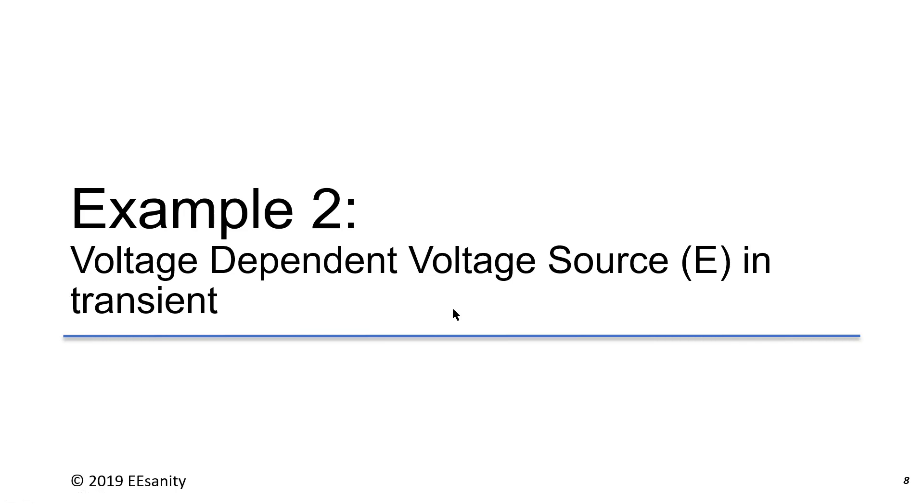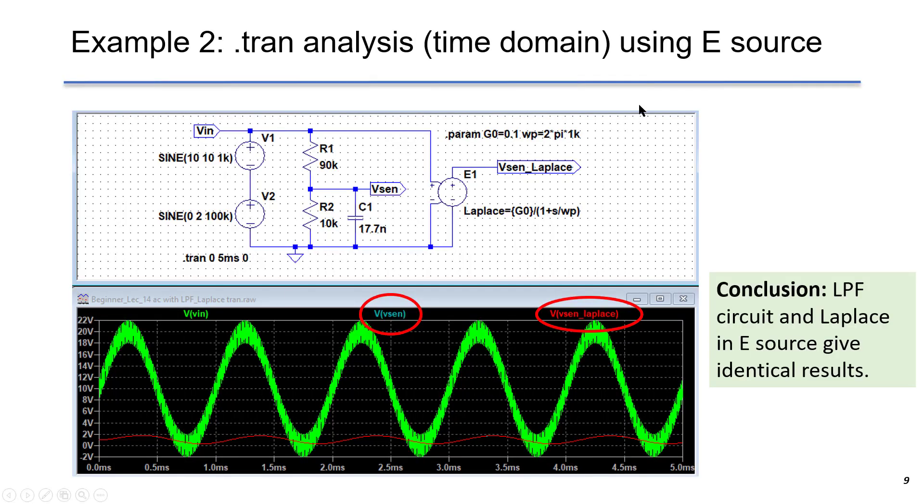In this example, we put Laplace and E source in transient simulation. This is the same setup. We put transient simulation here. You can see the Vsense and Vsense Laplace have the same output voltage and they are overlapping. The conclusion is low-pass filter circuit and Laplace transform in E source gives the identical results.